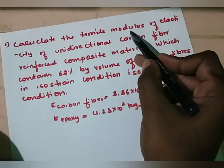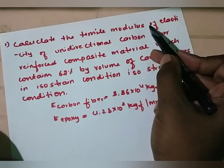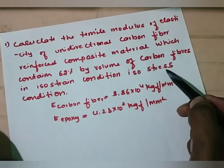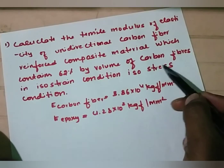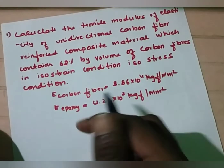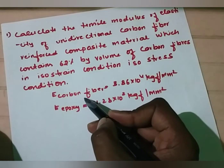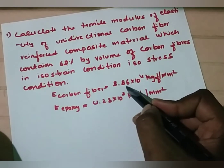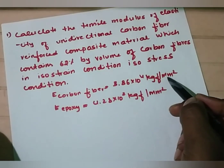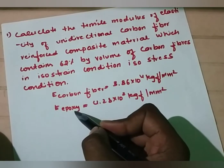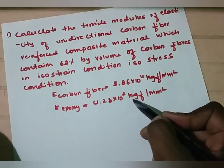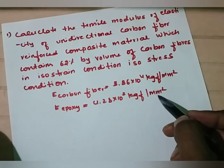We have to calculate the tensile modulus of elasticity, that is the E-value, at both isostress condition and isostrain condition. The modulus of elasticity for the fiber is 3.86 × 10⁴ kgf/mm², and for the matrix it is 4.28 × 10² kgf/mm².